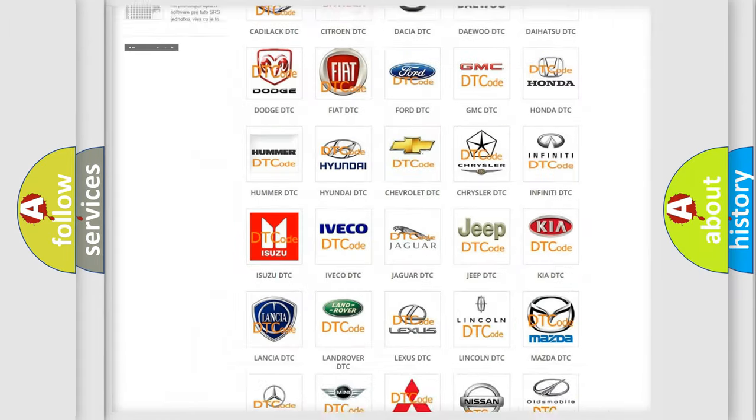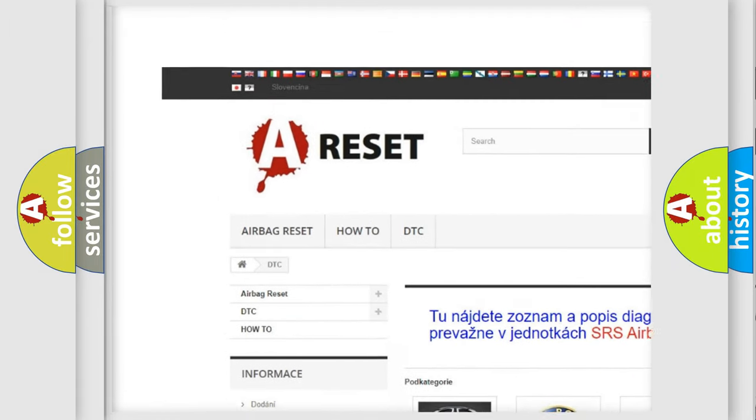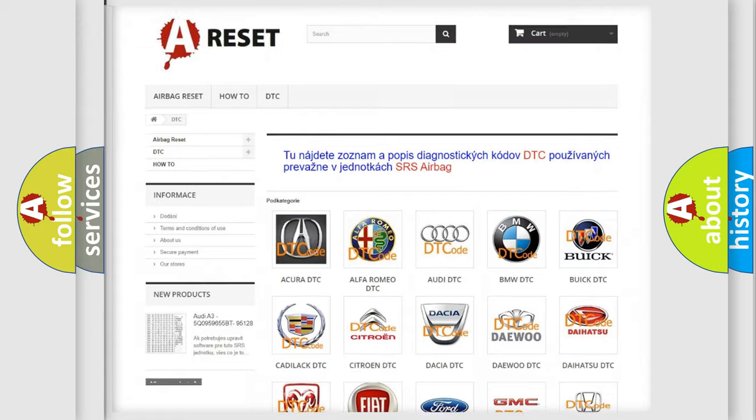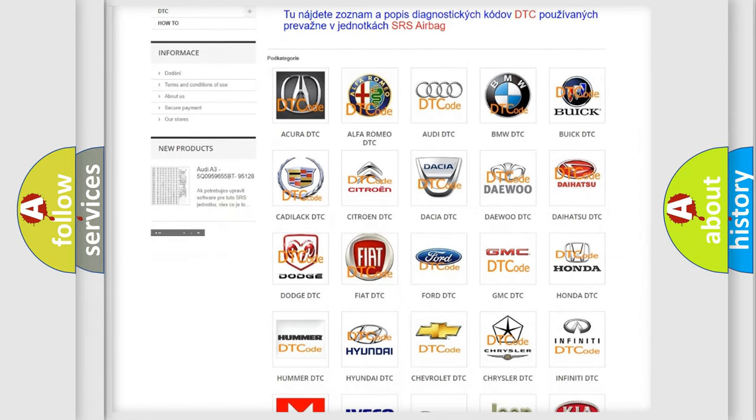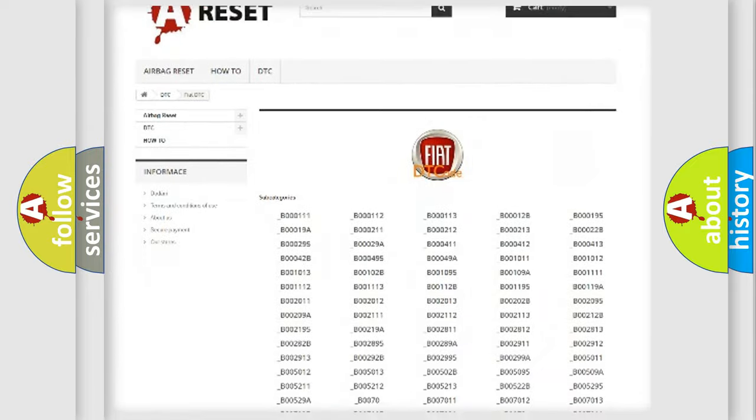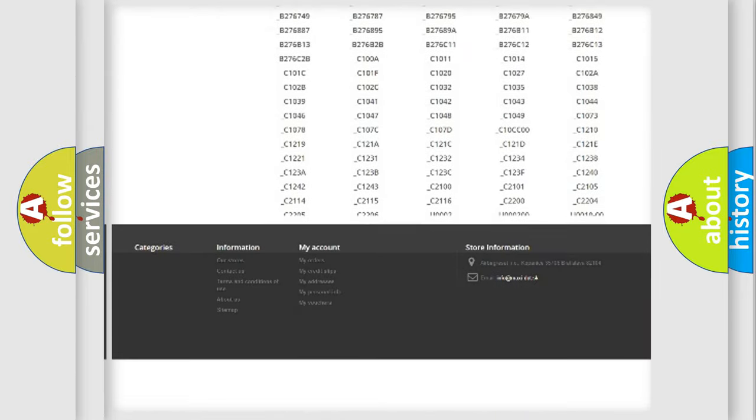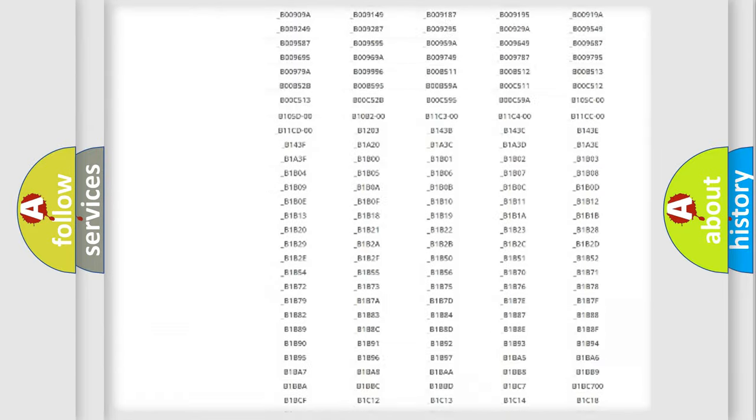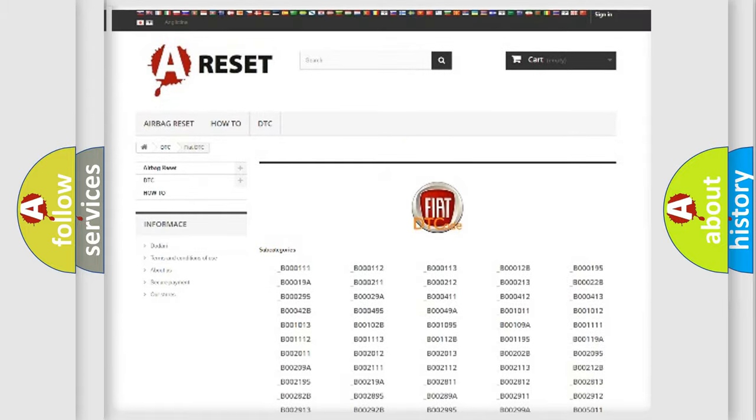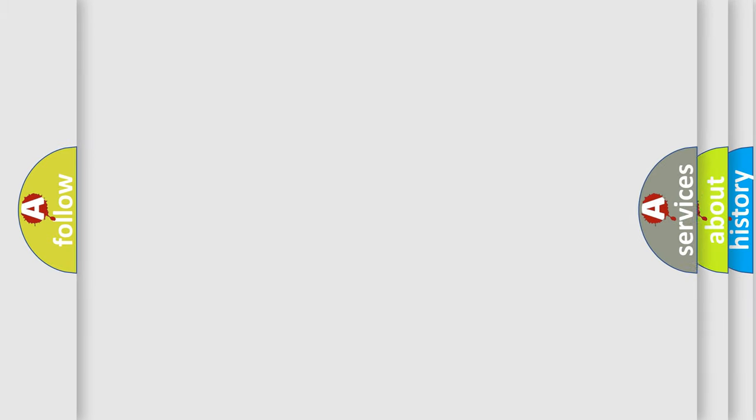Our website airbagreset.sk produces useful videos for you. You do not have to go through the OBD2 protocol anymore to know how to troubleshoot any car breakdown. You will find all the diagnostic codes that can be diagnosed in Fiat vehicles and many other useful things.